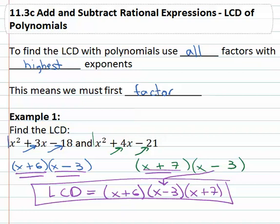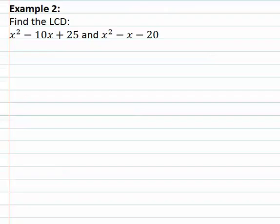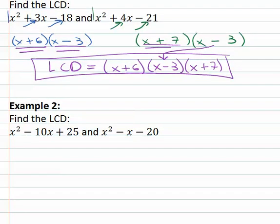Let's try another example. In this next example, keep that first example on the screen, we've got x squared minus 10x plus 25 for our first polynomial.